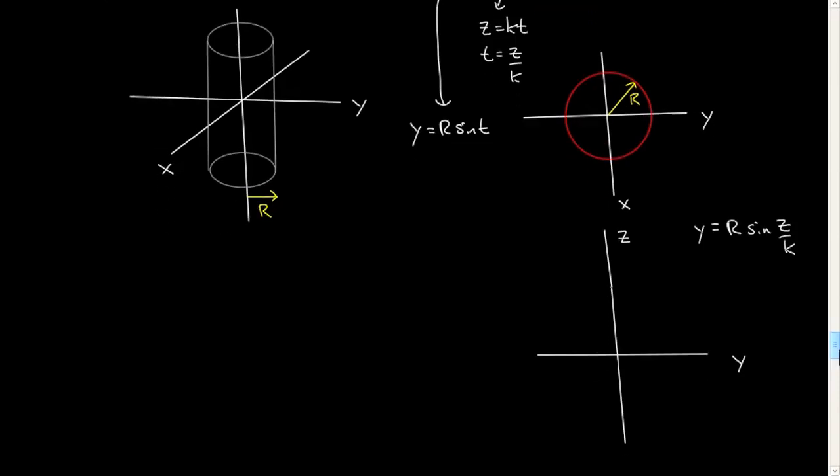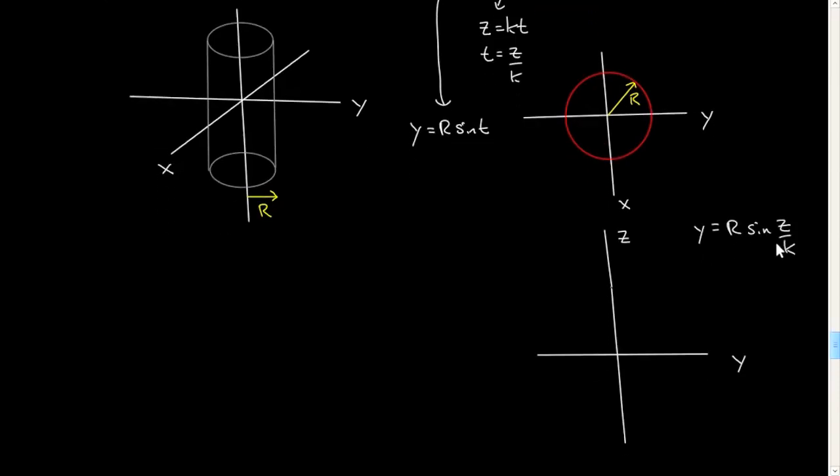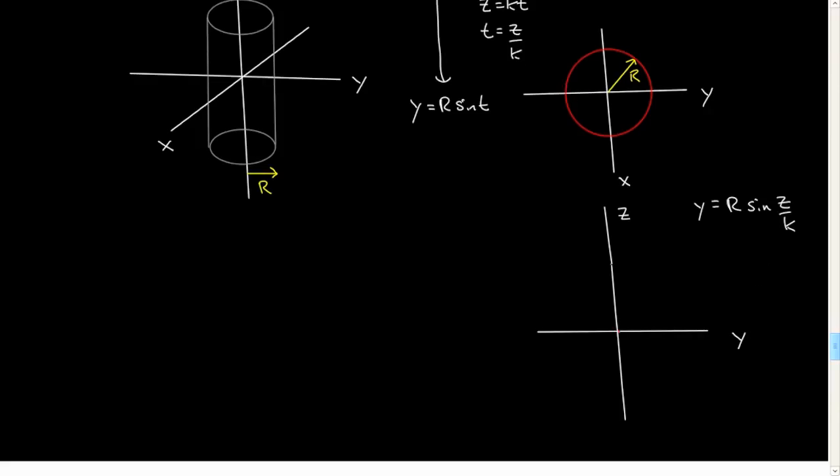If I look, Y varies sinusoidally as a function of Z. It'll start, it'll go through zero. When Z is zero, Y is zero. And then it'll repeat every point that is when Z is two pi times K. So this is two pi K minus two pi K. And then the magnitude of the oscillation is R. So I'll assume that this is roughly the same as that.